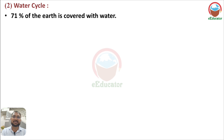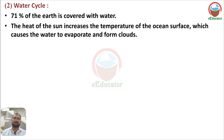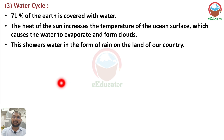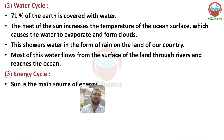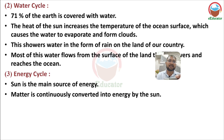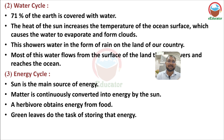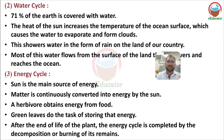Water cycle recap: 71 percent of Earth is covered with water. The heat of the sun increases ocean surface temperatures, causing water to evaporate and form clouds, which shower rain on the land. Water flows through rivers back to the ocean and evaporates again. Energy cycle recap: Matter is converted into energy by the sun; herbivores obtain energy from food; green leaves store energy; after a plant dies, its energy cycle is completed by decomposition or burning.